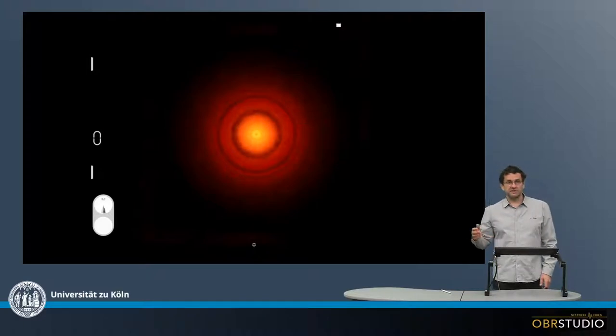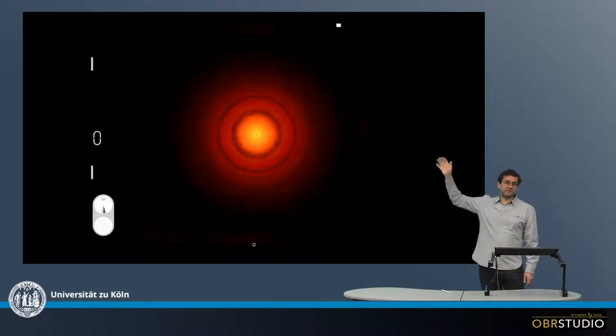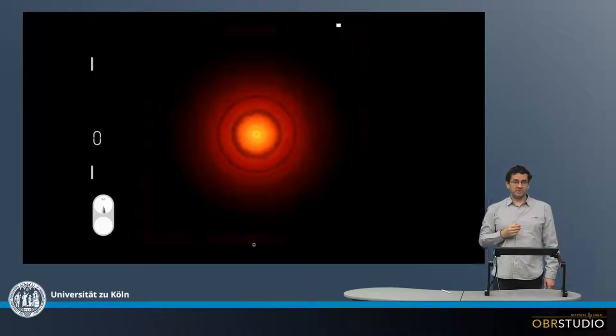This is another example. This is TW Hydra, and it is about 176 light-years away from our solar system, also around a Sun-like star.